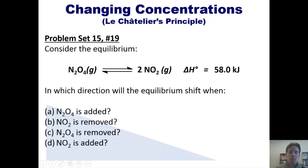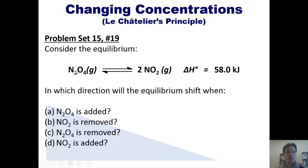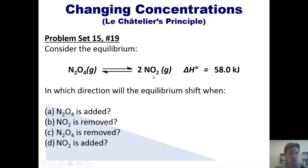If NO2 is removed, there's a gap on the right side of the equation, so the equilibrium shifts to the right as well, converting N2O4 into NO2 to restore balance. If N2O4 is removed, there's a gap on the left side, so NO2 has to convert into N2O4 and the equilibrium shifts to the left. If NO2 is added, there's excess on the right side, so the equilibrium also shifts to the left to get rid of excess NO2 and produce N2O4.